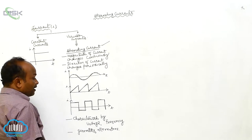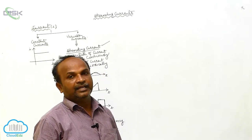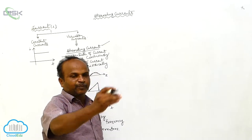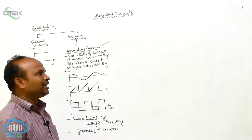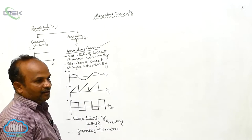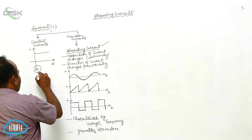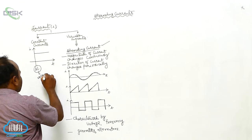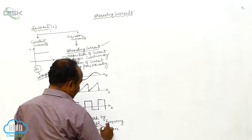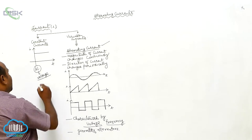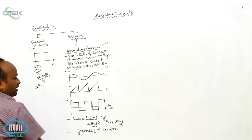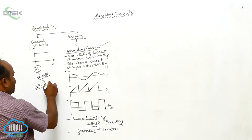We already know there is another current called direct current. If the magnitude of the current is constant with respect to the time, that is called direct current, represented by DC. This direct current has only voltage, but alternating current is characterized by voltage and frequency. Direct currents can be produced by cells or batteries.